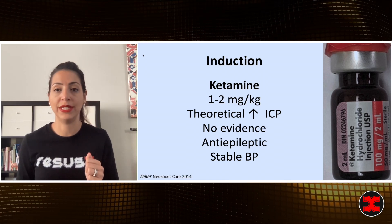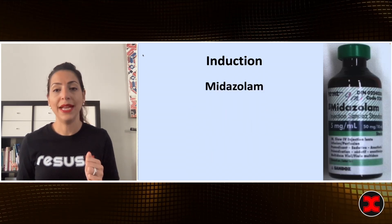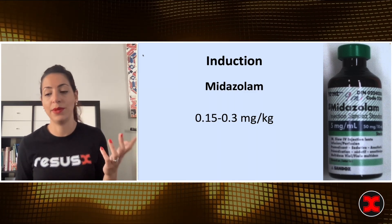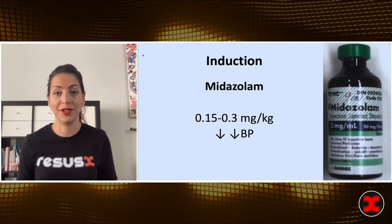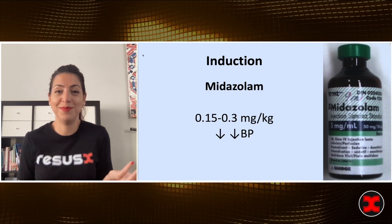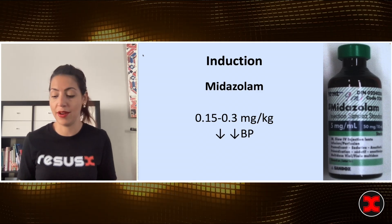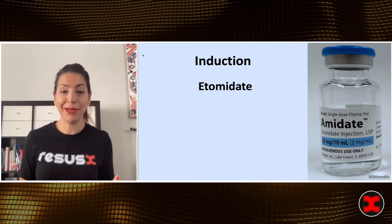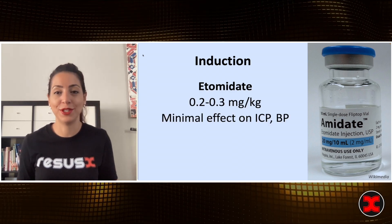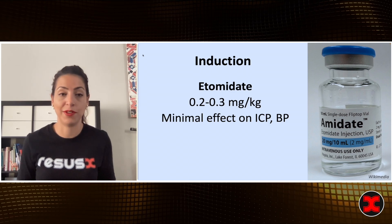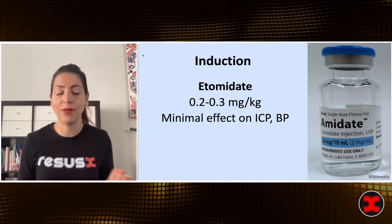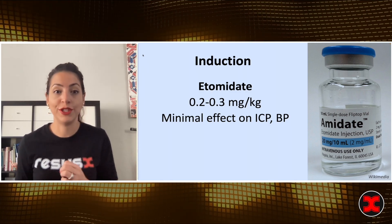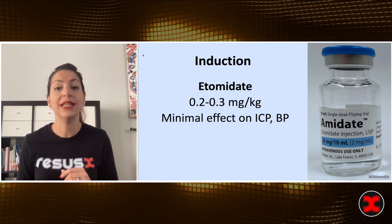Another induction option is midazolam, dosed at 0.15 to 0.3 milligrams per kilo. It has anti-epileptic properties, but it really lowers your blood pressure and doesn't have a lot of other benefits. So maybe not midazolam. Finally, etomidate at 0.2 to 0.3 milligrams per kilo — it doesn't really have any effects on ICP or blood pressure. So it's not harming you, but it's not really helping you either. If that's what you have and what you're used to, great. But if you can reach for another option and your patient can handle it hemodynamically, let's do that.